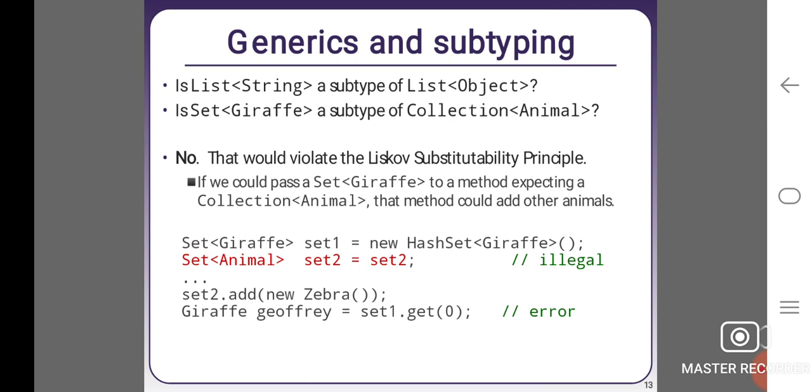Set<Animal> set2 = set1; // illegal. set2.add(new Zebra()); Giraffe g = set1.get(0); // error.